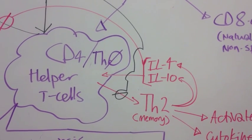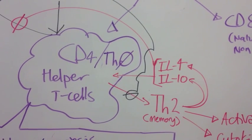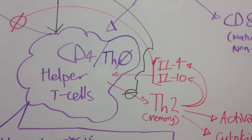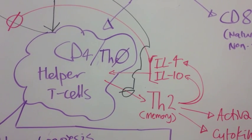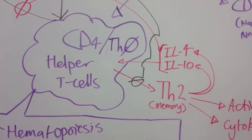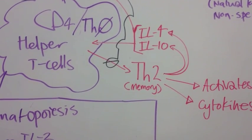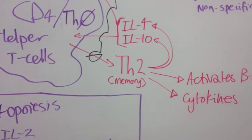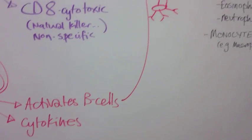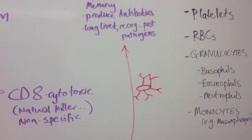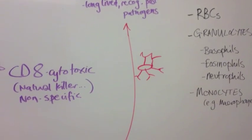If, however, the CD4 TH0 helper T cell is acted upon by interleukin-4 or interleukin-10, the TH0 cell differentiates and becomes a TH2 cell. These have memory and they activate B cells and antibodies are triggered as a result.